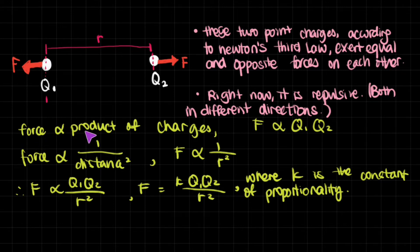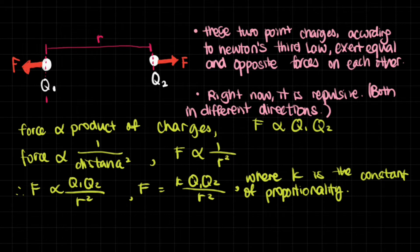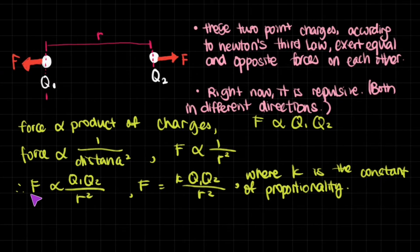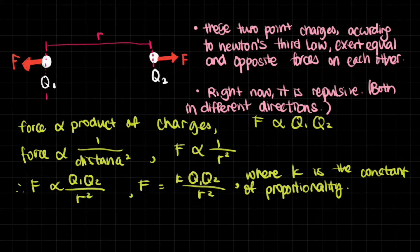Since the force is directly proportional to the product of their charges, force is proportional to q1 times q2. Force is also inversely proportional to the square of the distance, so force is proportional to 1 divided by r squared. Bringing these together, force is proportional to q1 times q2 divided by r squared. We convert this into an equation by multiplying in a constant of proportionality.